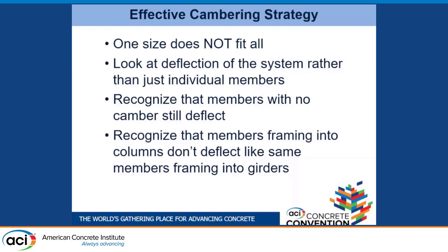What we found is that members that frame into columns typically deflect about 70 to 80% of the pin-pin calculated deflection. Members that frame into girders deflect more, because of the resistance to rotation of the beam-to-column connection relative to the resistance to rotation of the beam to the side of the girder — much less stiff. You need to look at the deflection of the system and not just the individual members.